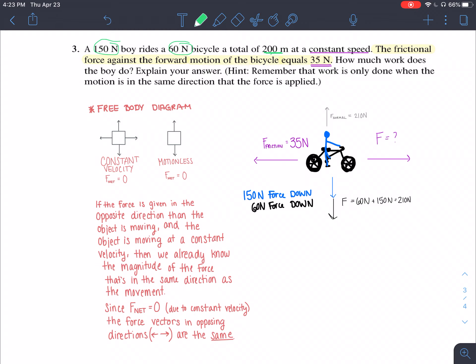Recall that free body diagrams if they're motionless have a net force of zero. But if they're moving at a constant velocity they also have a net force of zero, because there's nothing causing an acceleration, deceleration, anything like that. So all the forces are completely balanced. Since the problem told us this guy was moving at a constant speed, that tells us that the net force on the boy is going to be zero.